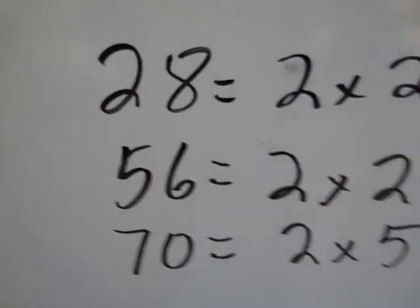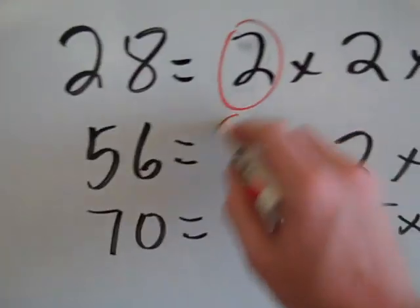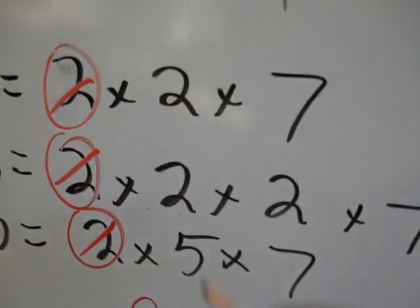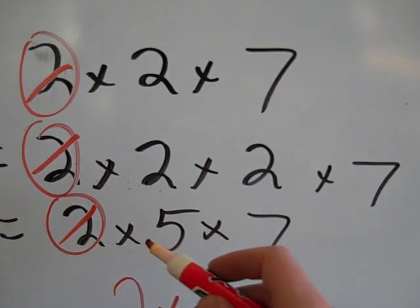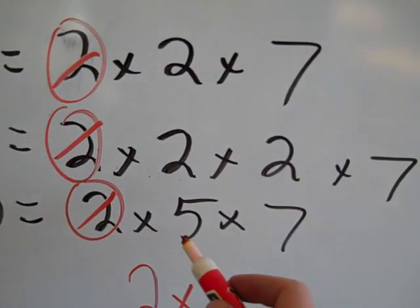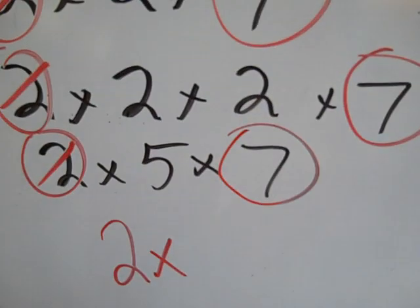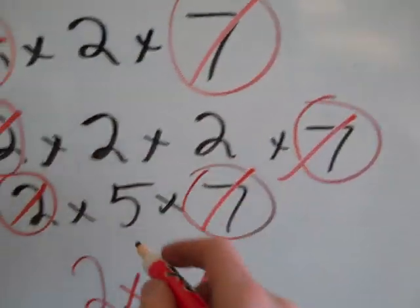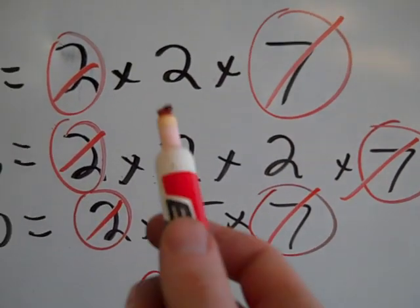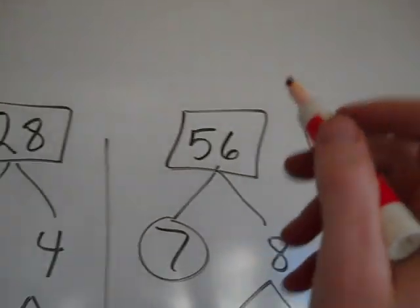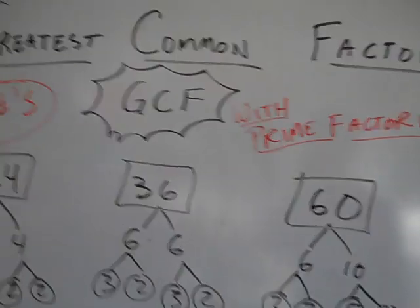Now I'm ready to look for the common factors. They all have a 2 — cross those off. Now these two have 2's but the third one doesn't, so I can't use the 2's anymore. Even though these two have a common 2, the third number doesn't, so I can't use it. But they all have a 7 at the end — a 7, a 7, a 7. Cross those off. Now there's no other numbers these have in common. So it's just 2 times 7, that's 14. The GCF equals 14. That's how you find the GCF of 70, 56, and 28 using prime factorization. Good luck. Thank you.